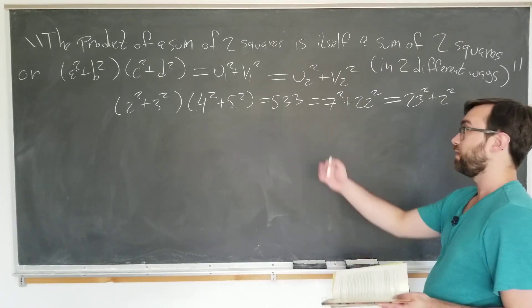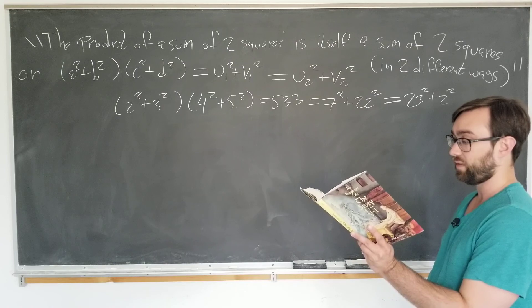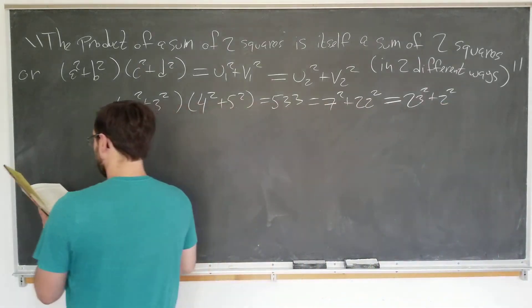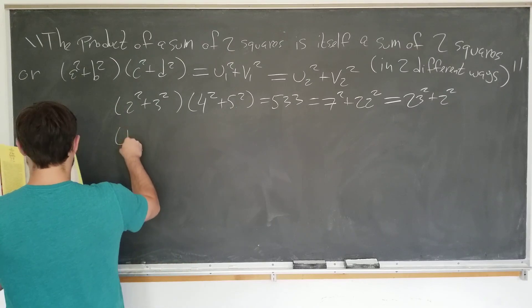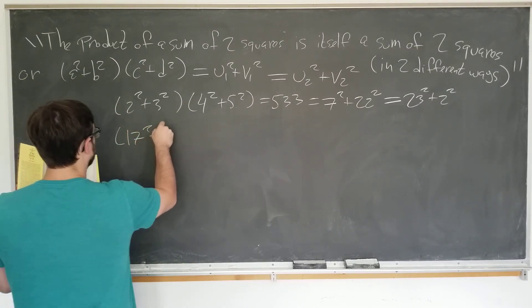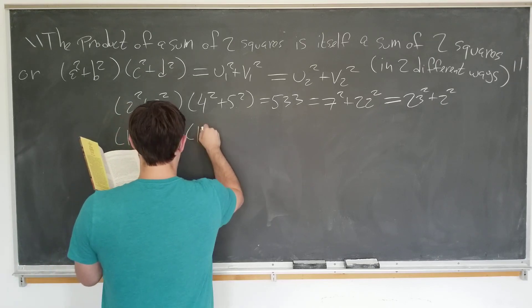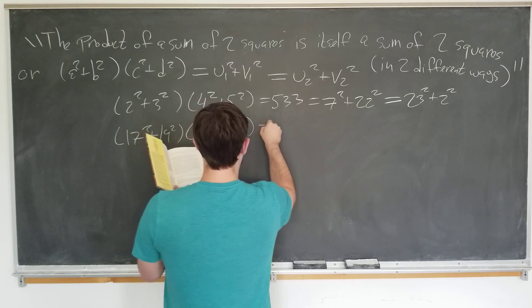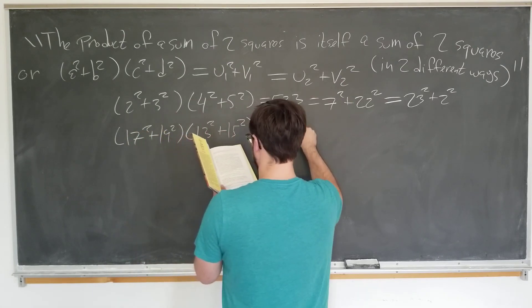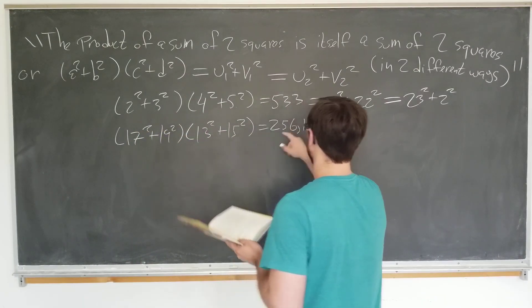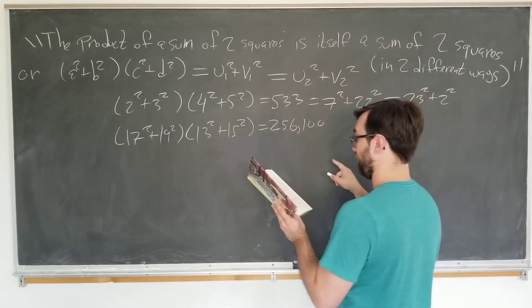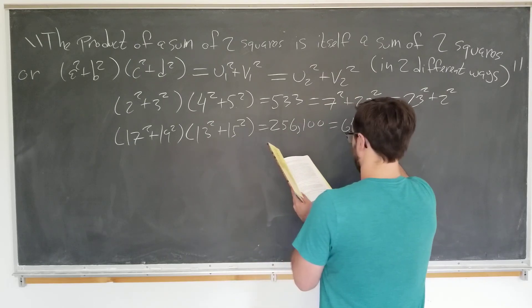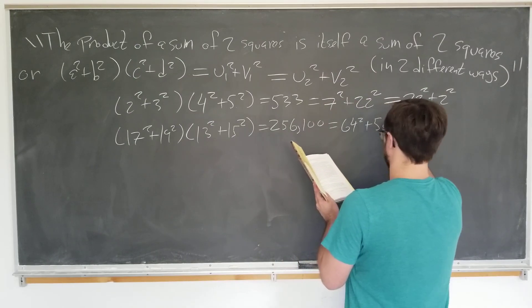Far too many numbers for me. This is one of the smallest examples. There are other larger examples as well. The second example given in the book is that 17 squared plus 19 squared times 13 squared plus 15 squared is equal to 256,100, which we can also write as 64 squared plus 502 squared.